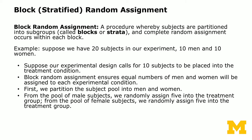Let's look at a simple example. Suppose we have 20 subjects: 10 men and 10 women, and our experiment calls for 10 subjects in the treatment condition. With complete or simple random assignment, you cannot guarantee exactly the same number of men and women in the treatment and control conditions. But block random assignment enables you to do that.